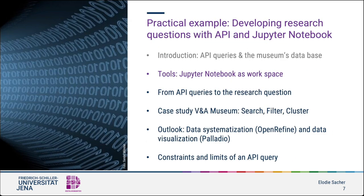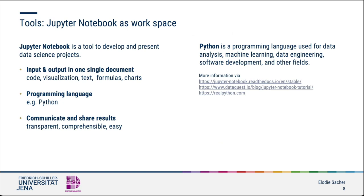API strings that can be inserted in the browser as URLs can be built step by step in Jupyter Notebook to operationally concretize a research question. The Jupyter Notebook is a digital workspace where we can develop and present data science projects. As a notebook, it integrates code and its output into a single document that combines visualizations, narrative text and mathematical equations. In a single document you can run code, view the output, and add explanations, formulas and diagrams.